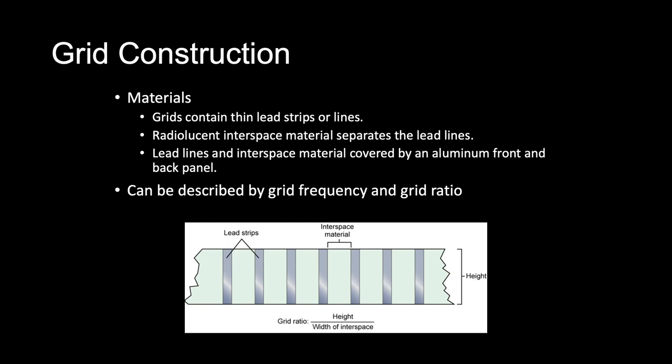Another way of describing grid construction is by its grid ratio. The grid ratio is defined as the ratio of the height of the lead strips to the distance between them. So grid ratio equals h divided by d, where h is the height of the lead strips and d is the distance between them, or the width of the interspace.